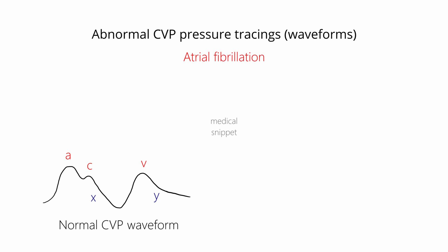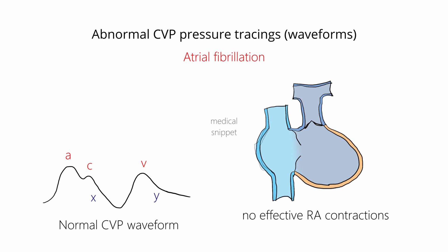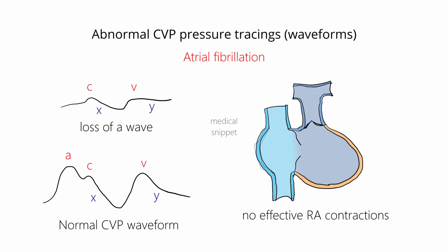First, we will see what happens in atrial fibrillation. As there are no effective atrial contractions in atrial fibrillation, there is loss of A waves in the CVP. This is the same reason for absent P waves in the ECG in atrial fibrillation. In reality, it is very difficult to appreciate the loss of A waves, as the atrium contracts in a disorganized manner and may not produce any appreciable pressure waves.